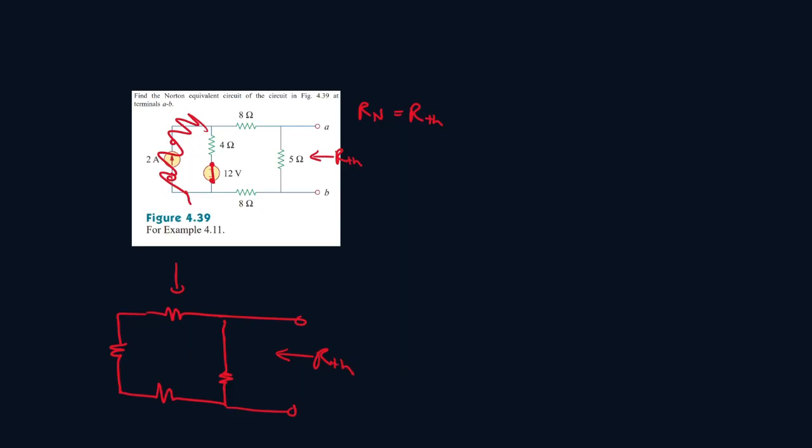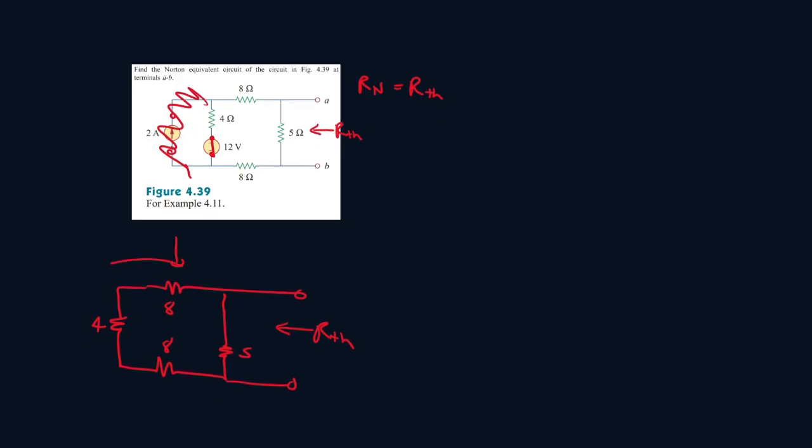So this is 8, 4, 8, 5. Add these up, so 8 plus 4 plus 8 that's 20. 1 over 20 plus 1 over 5, 1 over that gives you 4. So R_Th will be equal to 4 ohms. That means R_Norton is equal to 4 ohms.